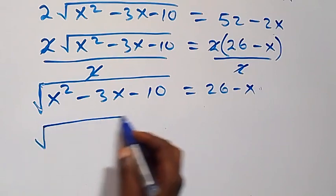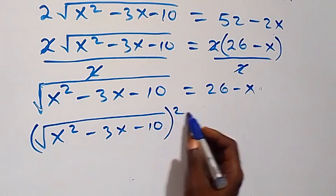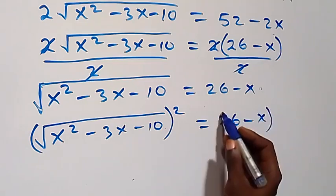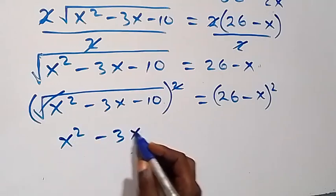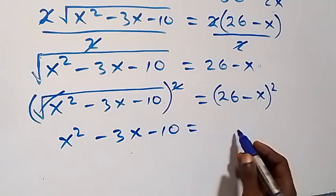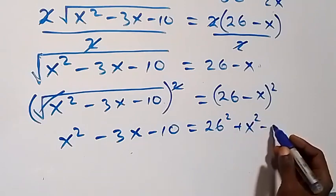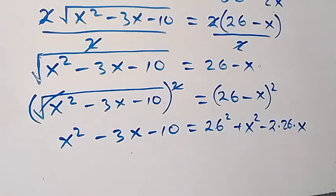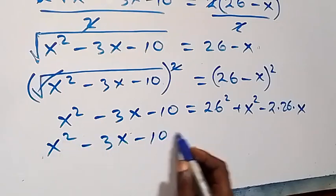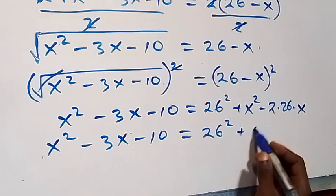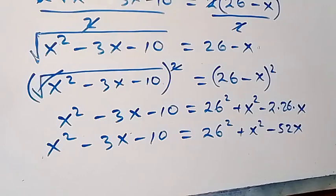Taking the square on both sides: square root of (x squared minus 3x minus 10), all squared, equals (26 minus x) squared. The square cancels the square root on the left, giving x squared minus 3x minus 10. On the right, expanding (26 minus x) squared gives 26 squared plus x squared minus 2 times 26 times x, that is 676 plus x squared minus 52x.